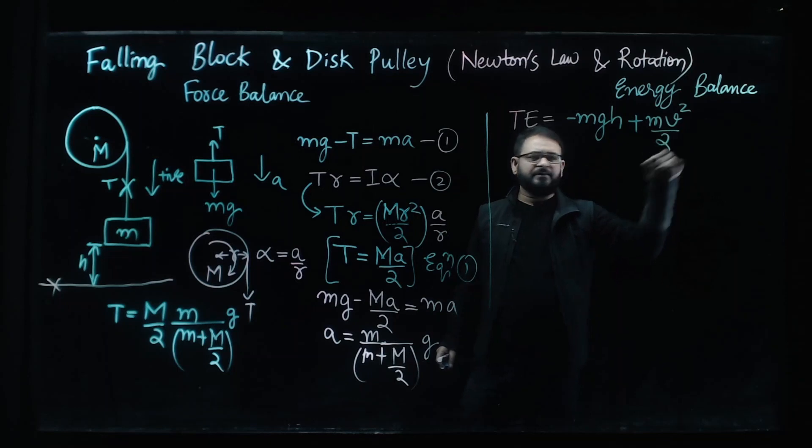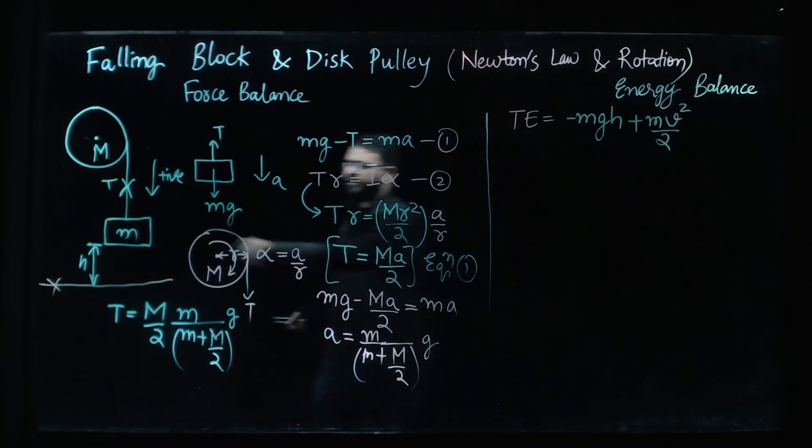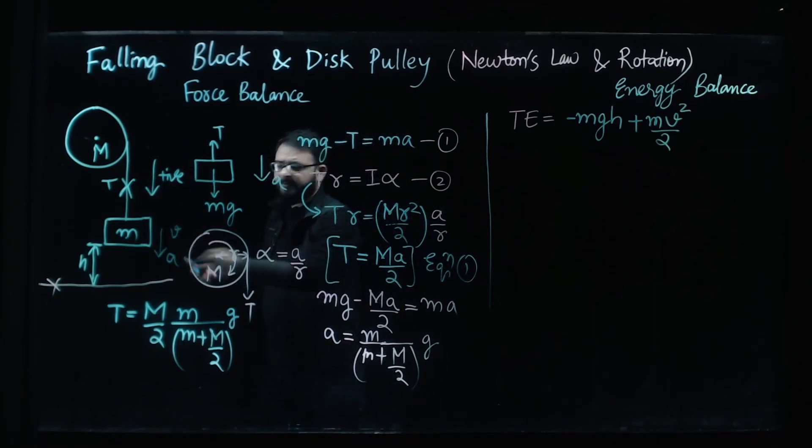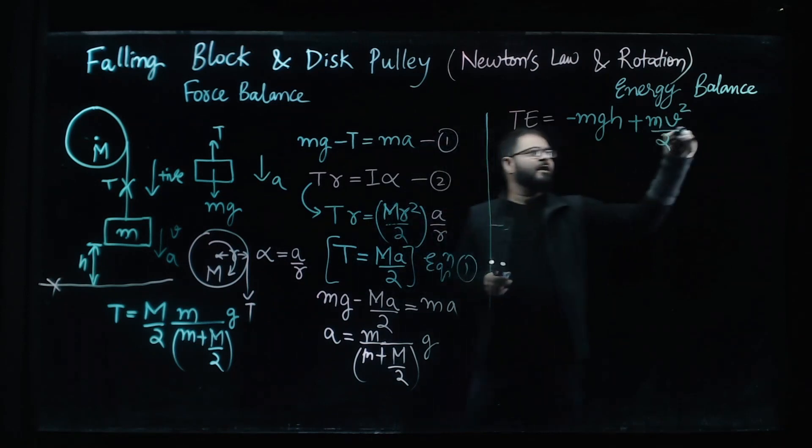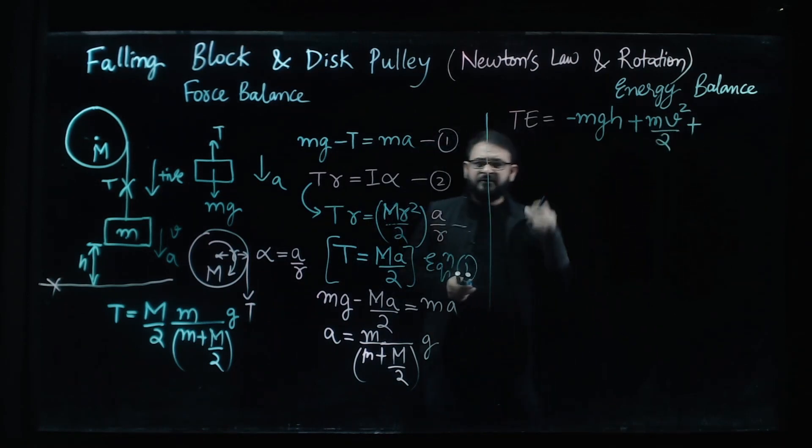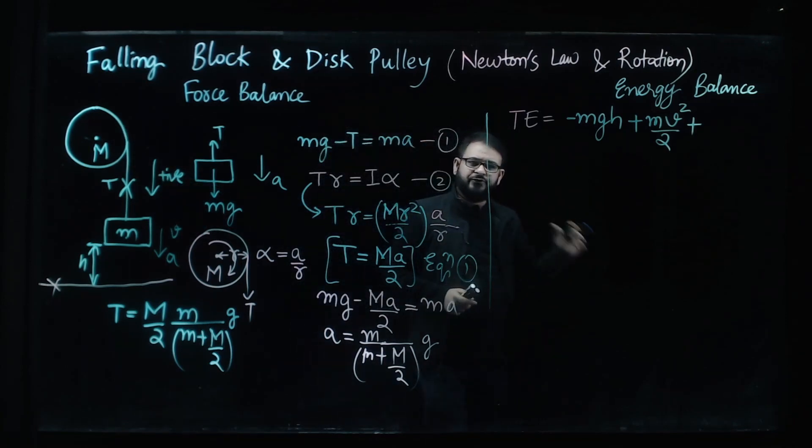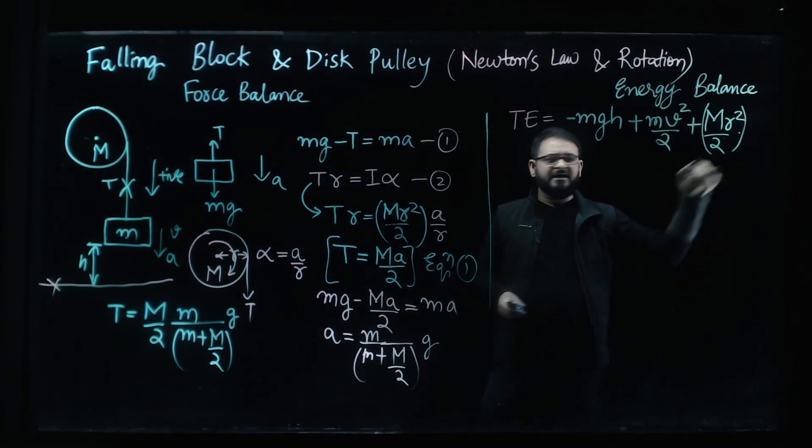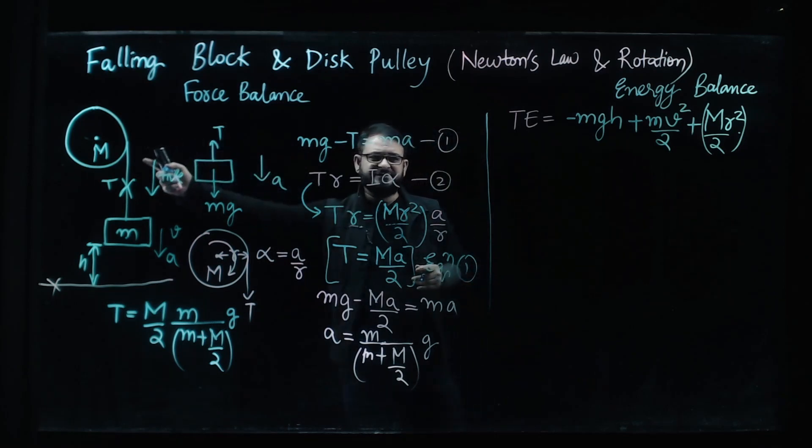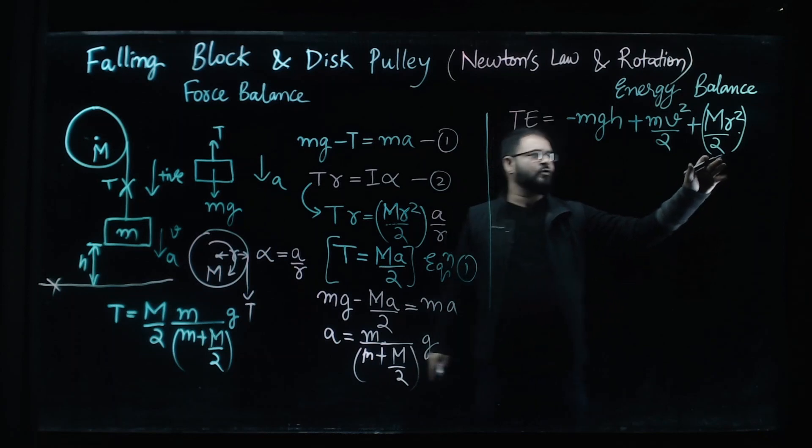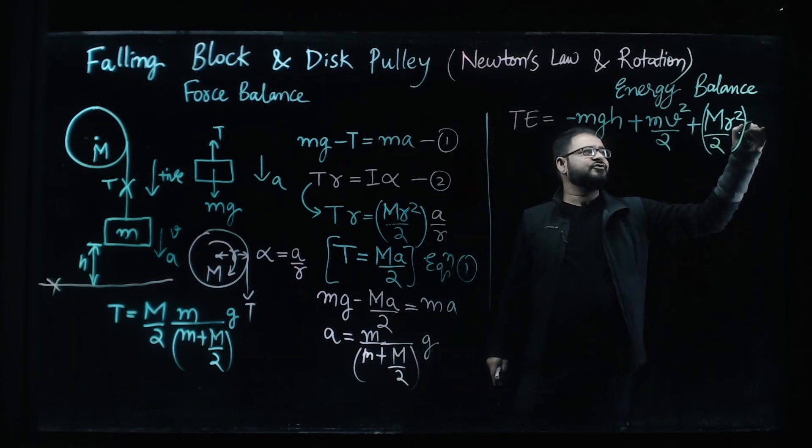Suppose at any given moment this block is moving at velocity v, it's accelerating downwards with an acceleration a, and then we have another kinetic energy due to rotation, the rotational kinetic energy of this pulley. Now pulley is a disc so we have the moment of inertia mr squared by 2 times omega squared divided by 2, so this is I omega squared by 2.